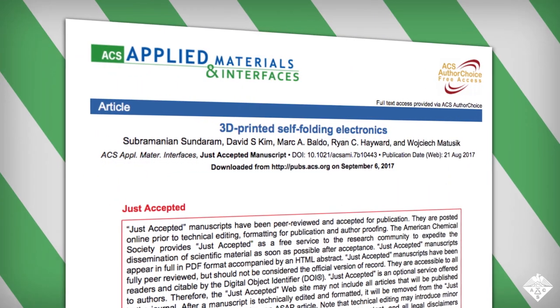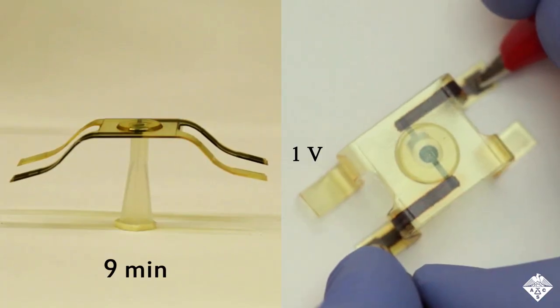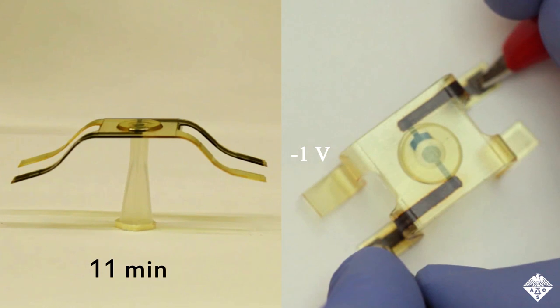Now in ACS Applied Materials and Interfaces, researchers report a way to help tackle this challenge by printing electronics that can fold themselves into a predetermined shape.